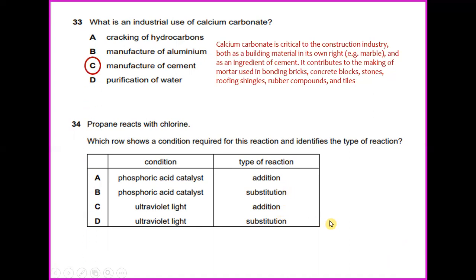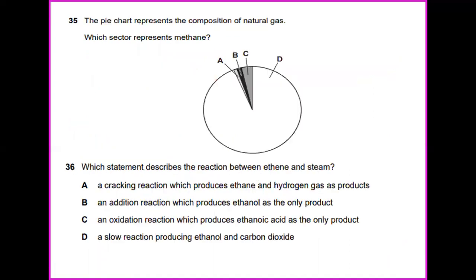Propane reacts with chlorine. Which row shows the condition required for this reaction and identifies the type of reaction? It will be ultraviolet light and substitution type of reaction.